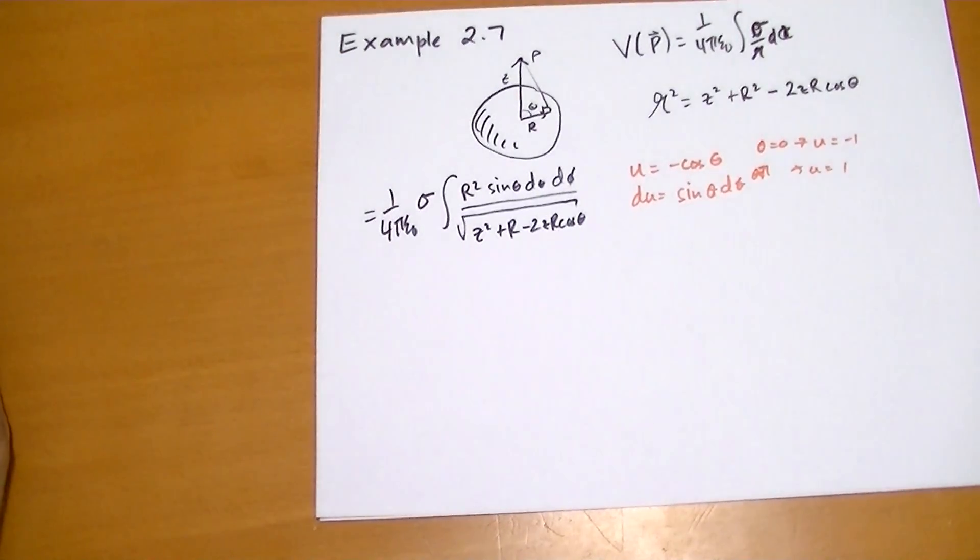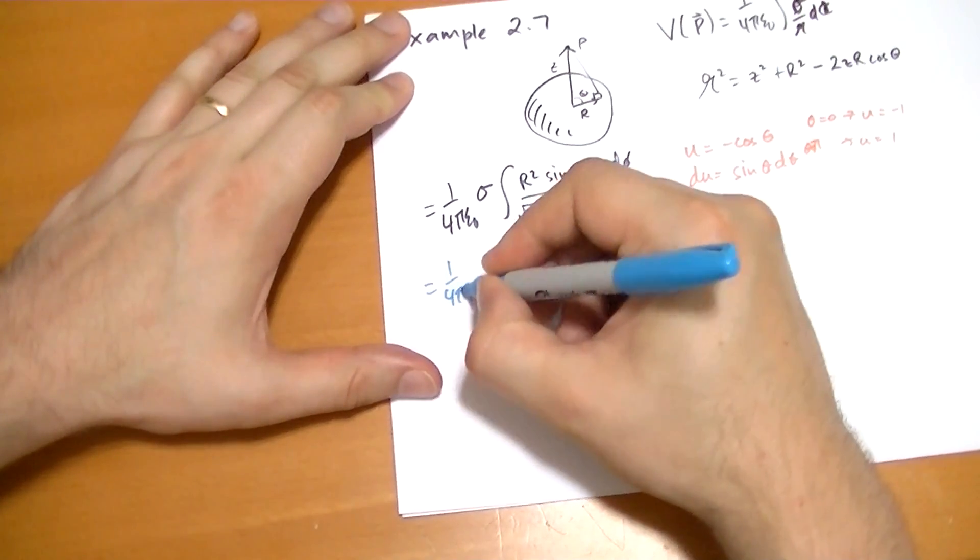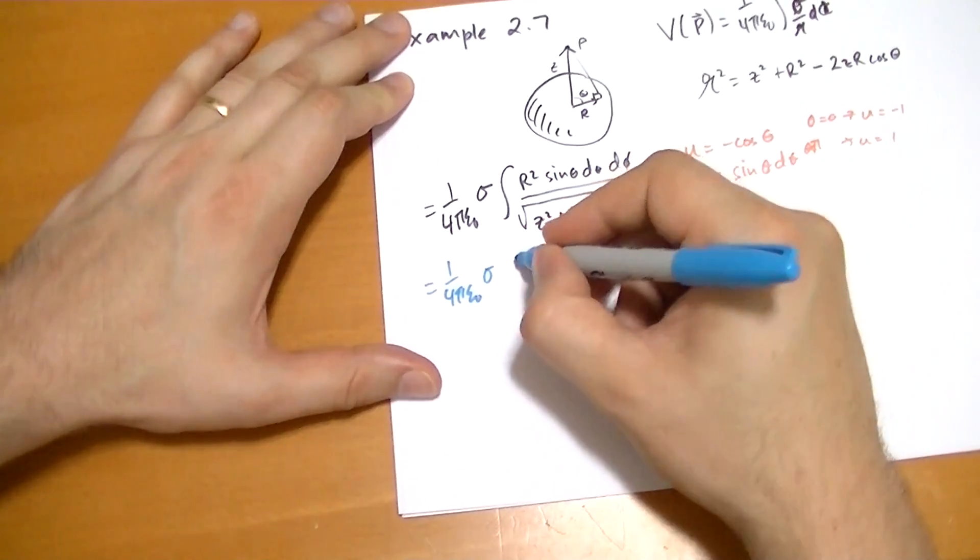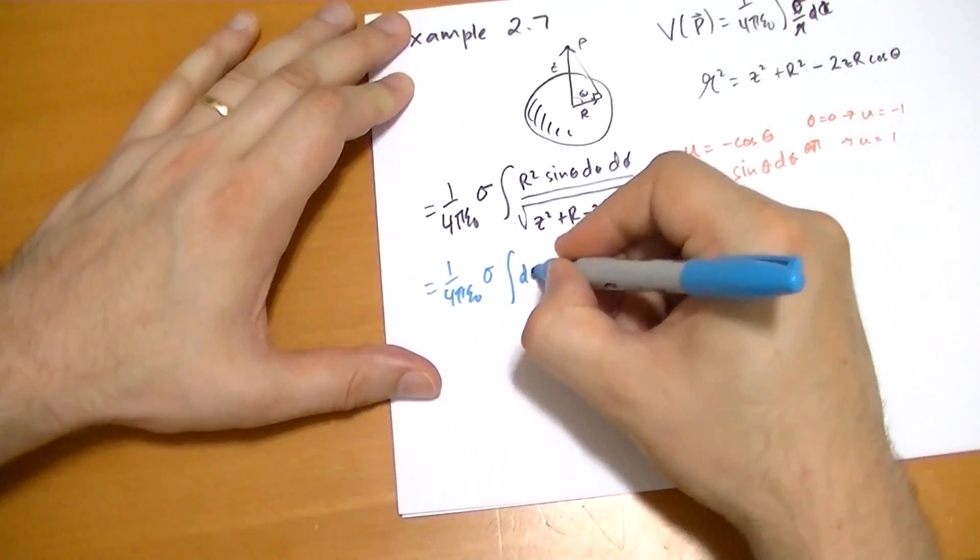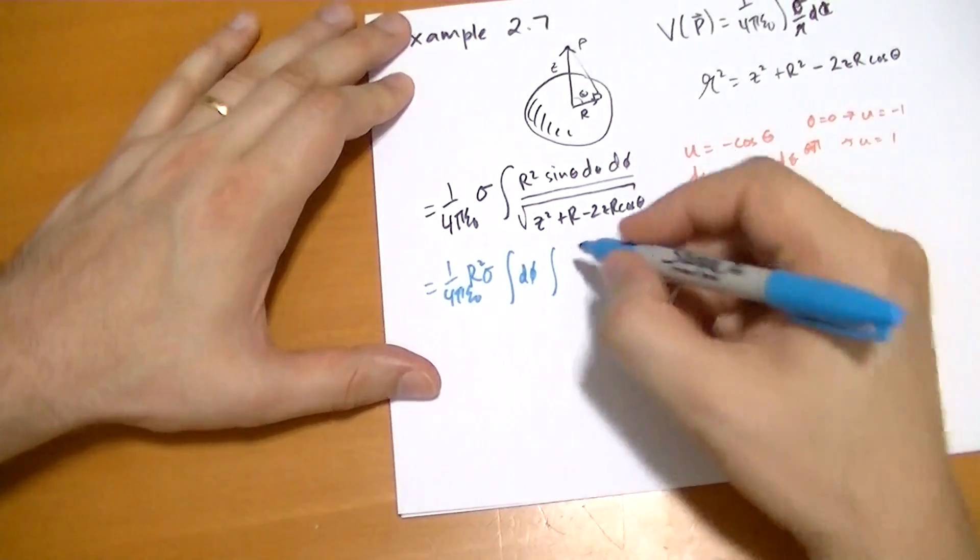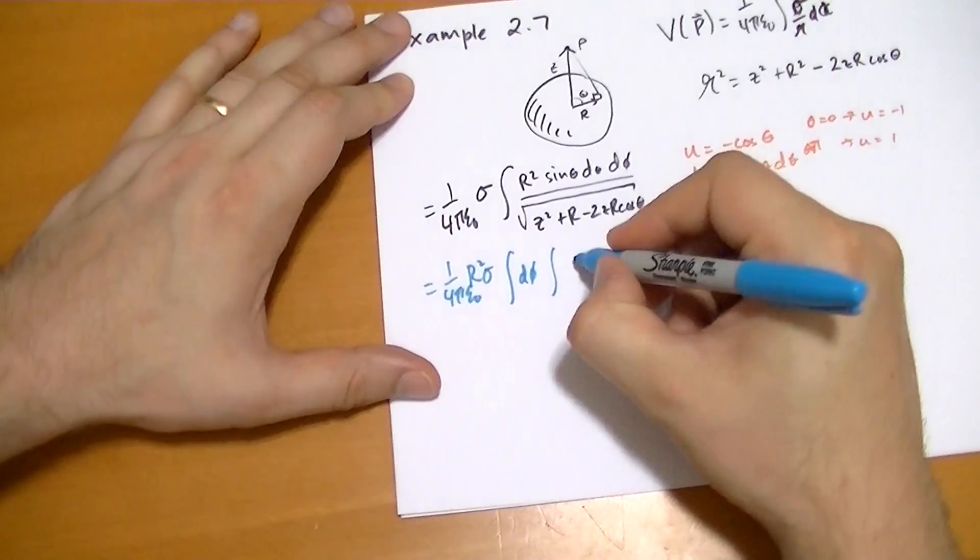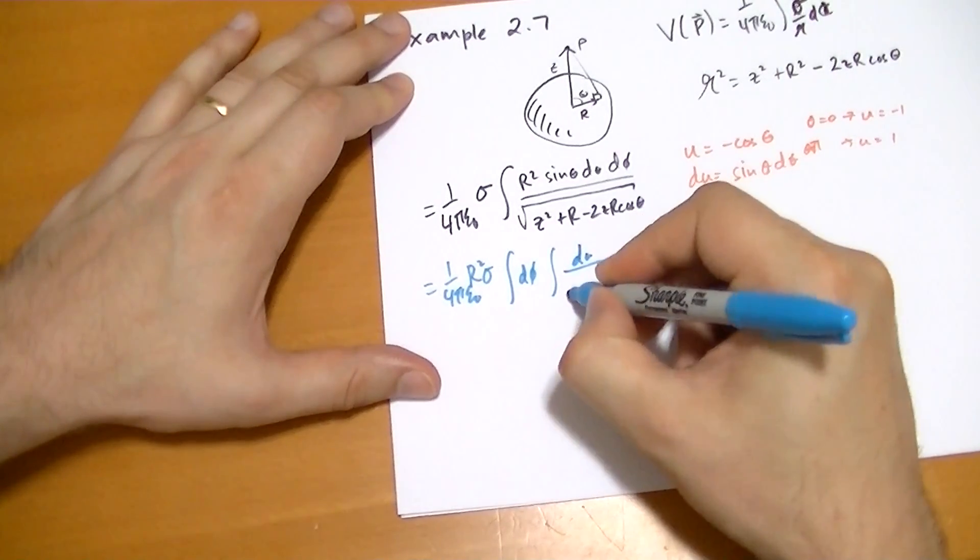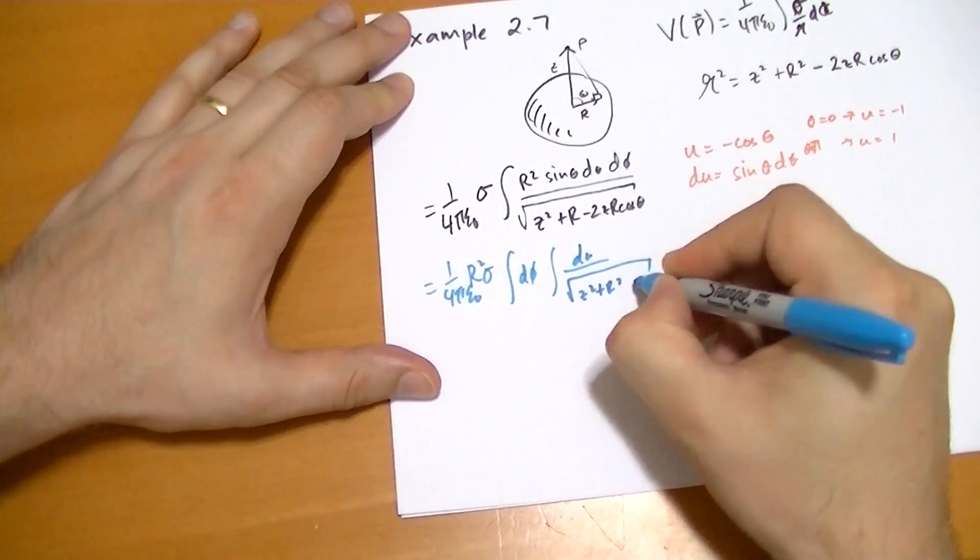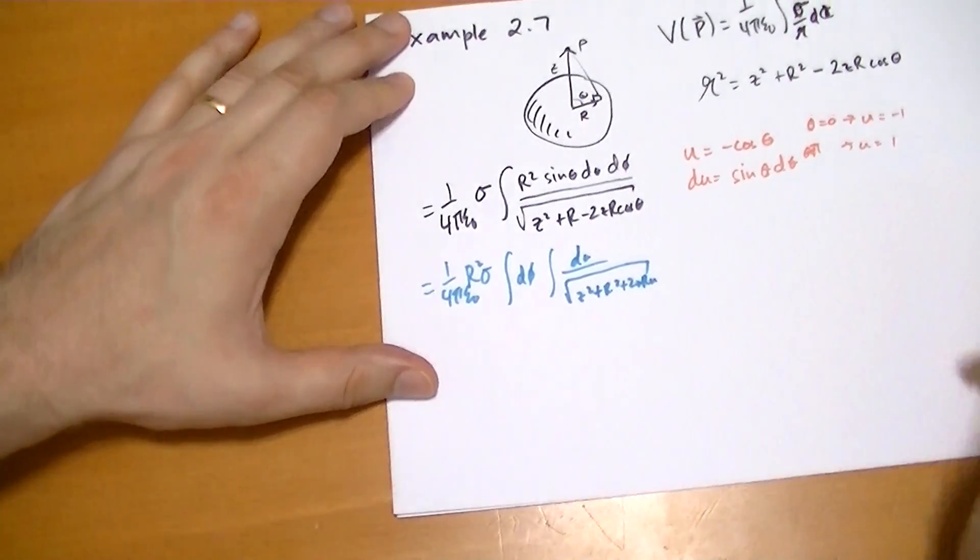So, substituting that in, and I'm going to diverge from the text here, so I'm going to use a different color. So sigma integral d phi, which is going to be 2 pi, and then integral r squared. We can pull the r squared, it's constant as well. So now we have sin theta, which becomes du all over the square root of z squared plus r squared plus 2 z r u.